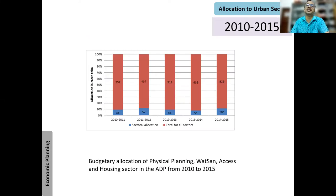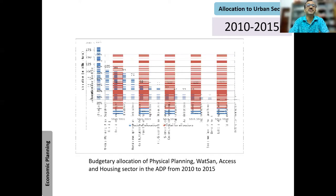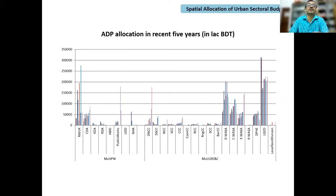Looking at spending from 2010 to 2015, we see that sectoral allocation and total allocation increased every year. Spending on transport, housing, and drainage also increased, but compared to the whole budget it is very little. In the transport sector the figure is 194, and water supply and sanitation is 104. Most of the money goes into the tunnel, bridges, and all the big projects.